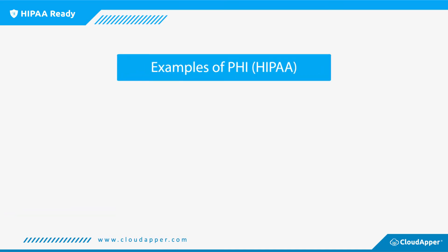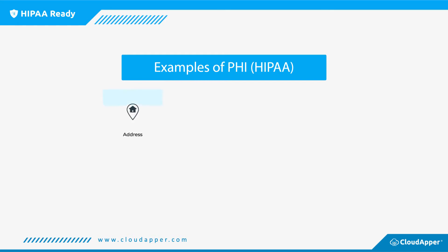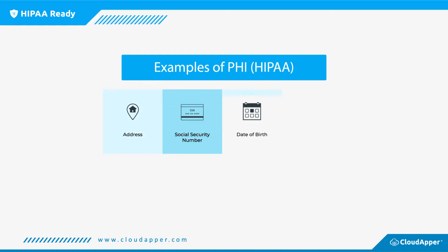The protected health information, otherwise known as PHI, under HIPAA pertains to any information that can personally identify an individual, such as your address, your social security number, date of birth, as well as your demographic information.